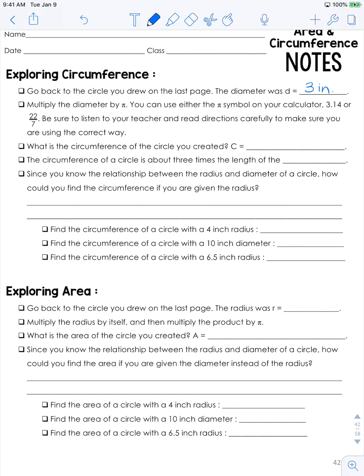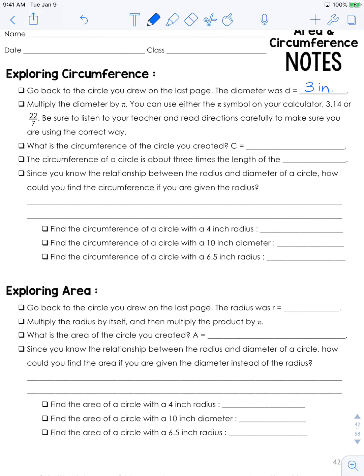So we are going to say that our circumference is equal to 3π, and it is approximately 9.42 inches.